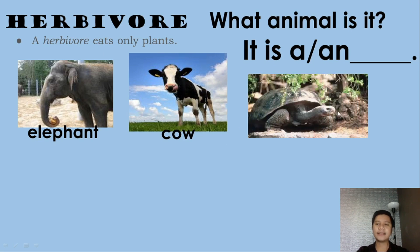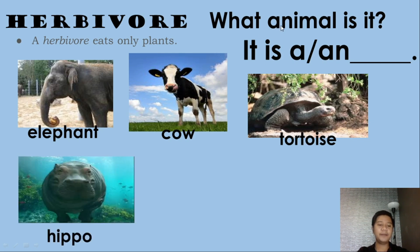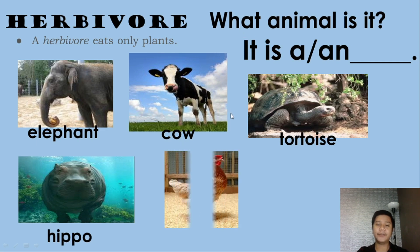What animal is it? It is a cow. A cow is an herbivore because a cow only eats plants. Next, what animal is it? It is a tortoise — because a tortoise only eats seaweed or plants. What animal is it? It is a hippo.